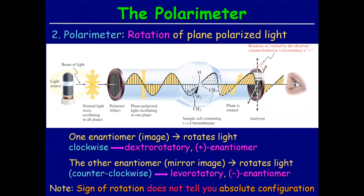Another way would be using a polarimeter. This is much cheaper and much easier, but it will not give you the image of the structure - it just tells you whether your molecule will rotate light to the left or to the right. Do you know what a polarimeter is?